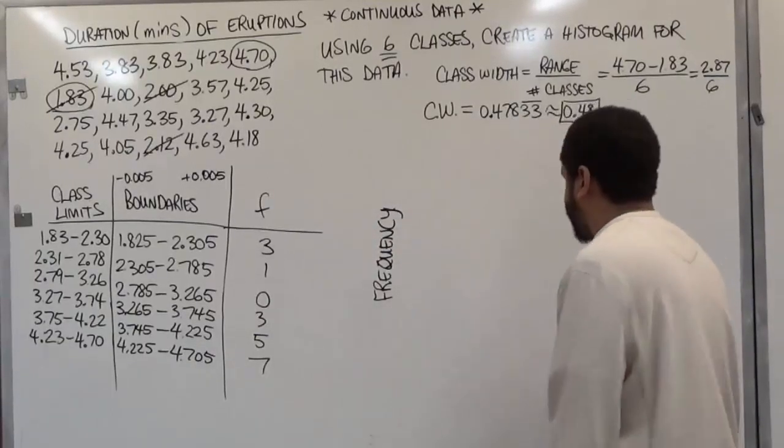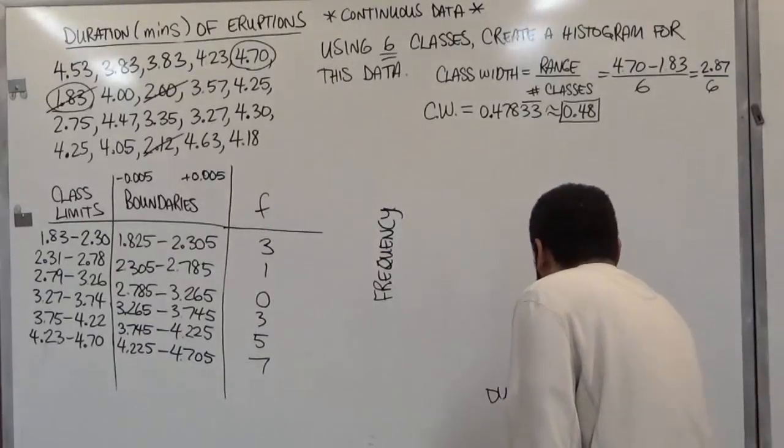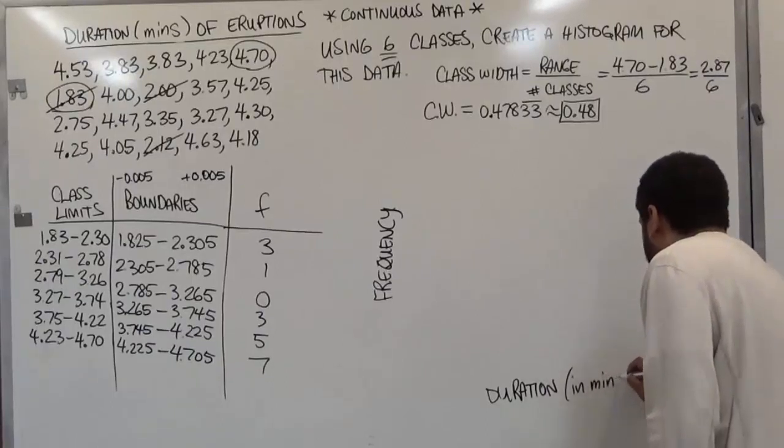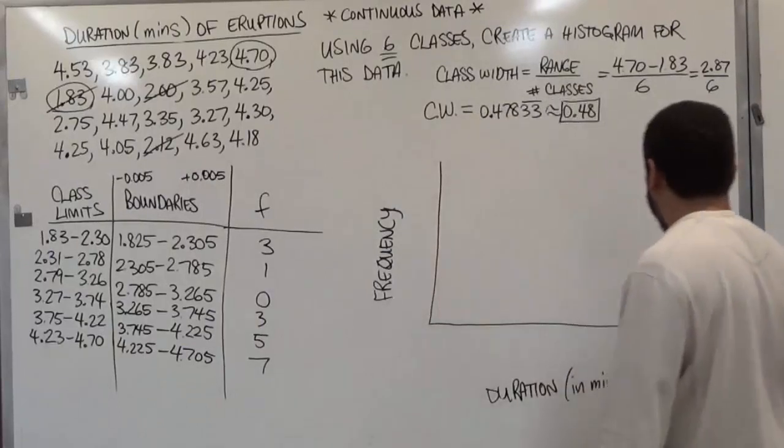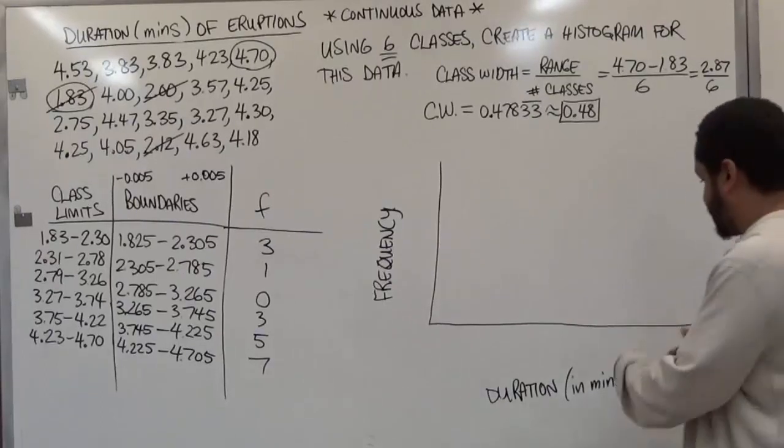And we're going to have our duration in minutes on the horizontal. So here we'll have our histogram placed. We're going to need a little bit more space because these class boundaries that we're dealing with are going to have three digits in them.